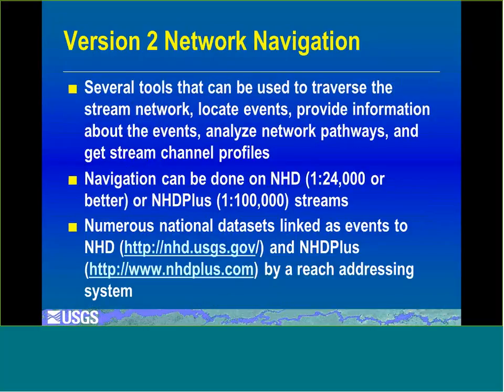There's network navigation functionality with several tools to traverse the stream network, locate events, provide information about those events, analyze network pathways, and get stream channel profiles. Navigation can be done on the high-resolution NHD, which is generally 1:24,000 scale stream network or better. There's also NHD+, based on medium-resolution NHD at 1:100,000 scale. There are numerous national datasets linked as events to the NHD and NHD+ — you can visit the websites for NHD and NHD+ to find out what datasets have been linked to those stream networks.